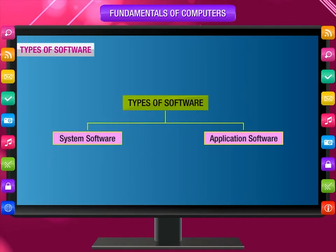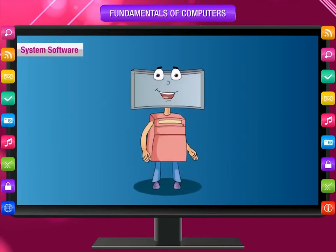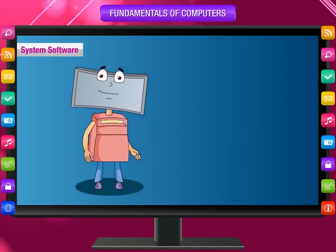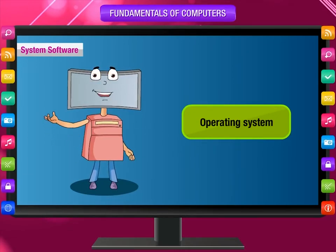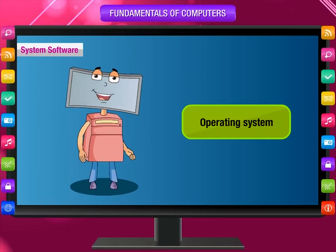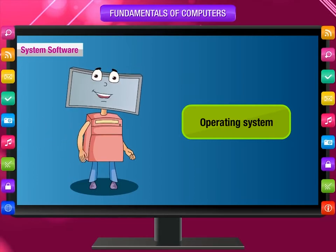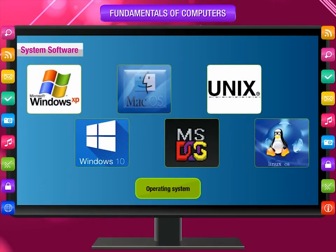There are two types of software: system software and application software. System software is a set of programs that controls all the operations of a computer system. The operating system is a part of system software that makes the computer run. It is a set of programs which controls the working of the hardware as well as the software. It manages all the input, storage, processing, and output activities of a computer system. To work on a computer, it is essential to have an operating system.